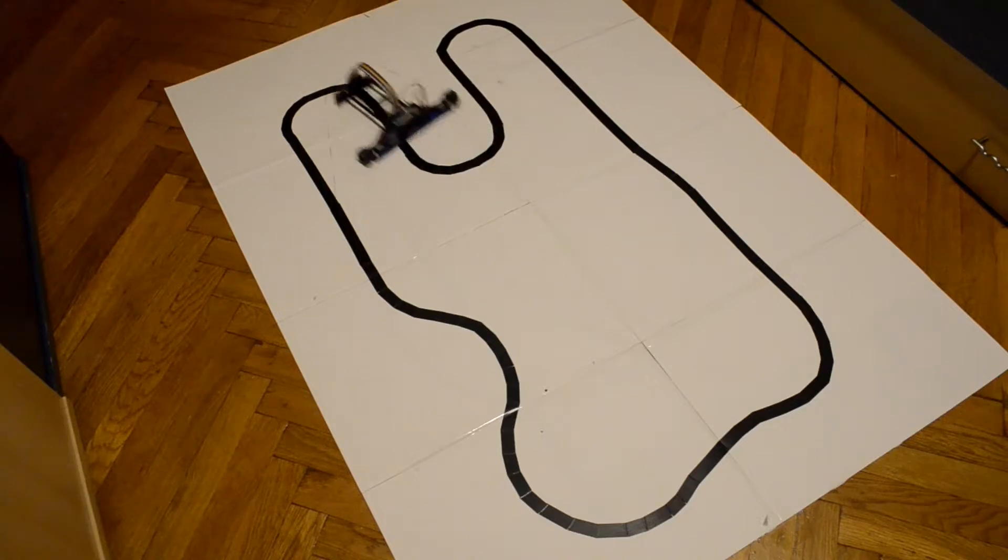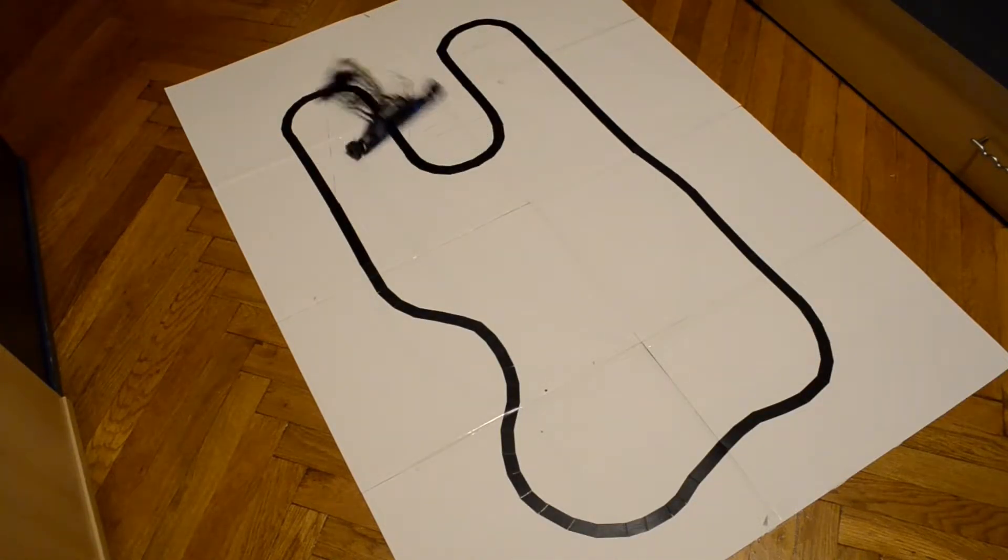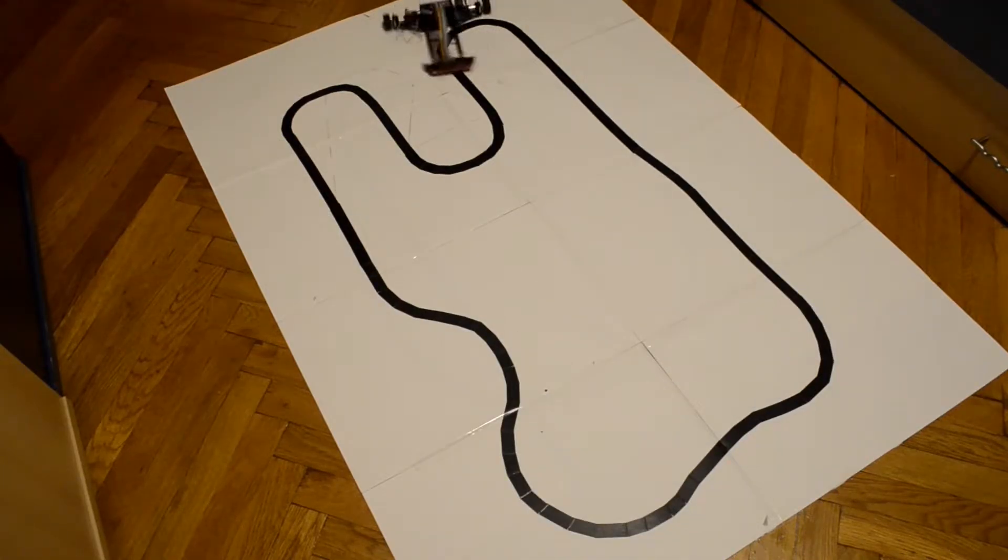You can see here the first line follower model in action. It struggles to take the tightest curves and seems out of control on a narrower track. You can find the showcase of this model in my first video regarding line followers in the link in the description.